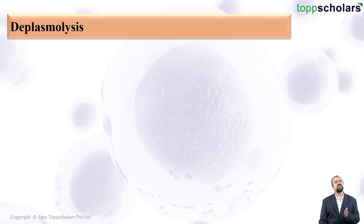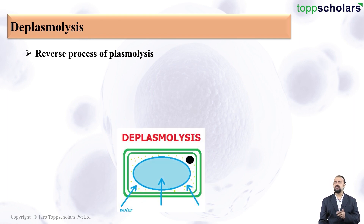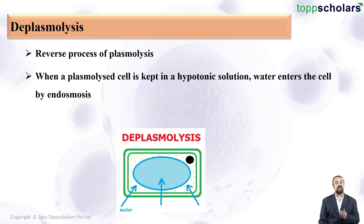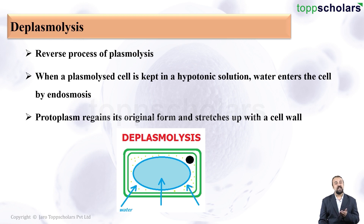Now let us study the exact opposite process. If the cell is kept in a hypotonic solution, what we will see is called deplasmolysis — the reverse process of plasmolysis. This occurs in a hypotonic solution wherein the concentration of solutes outside is low compared to inside the cell. Due to osmosis, water starts entering the cell by endosmosis, and the protoplasm eventually regains its original form and stretches right up to the cell wall.